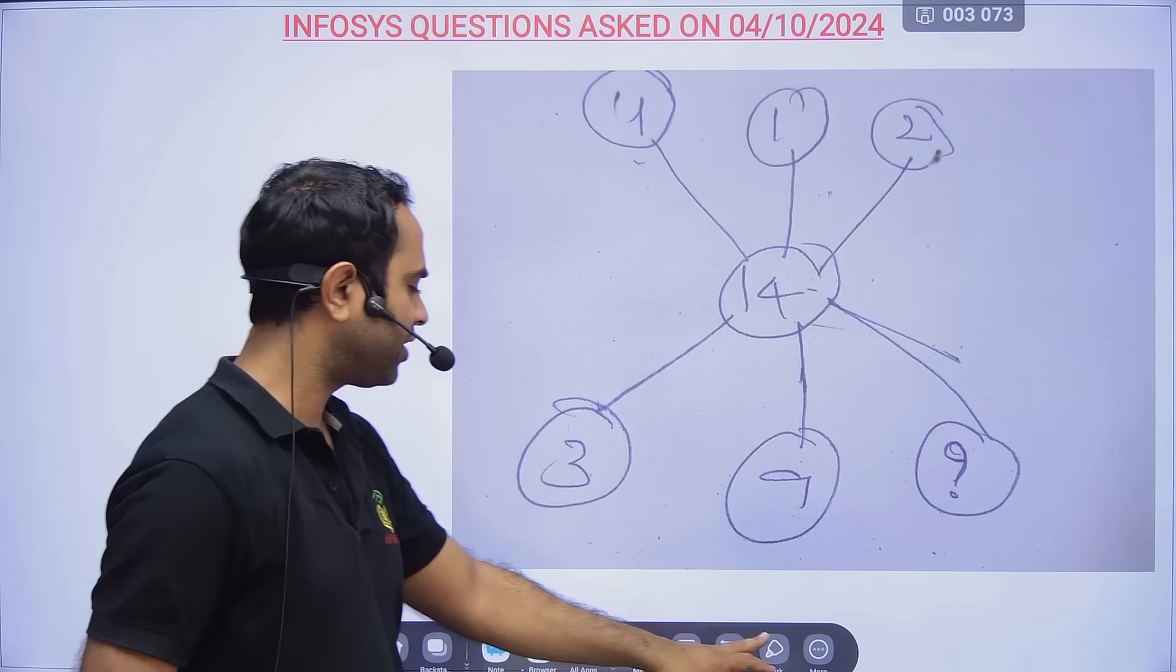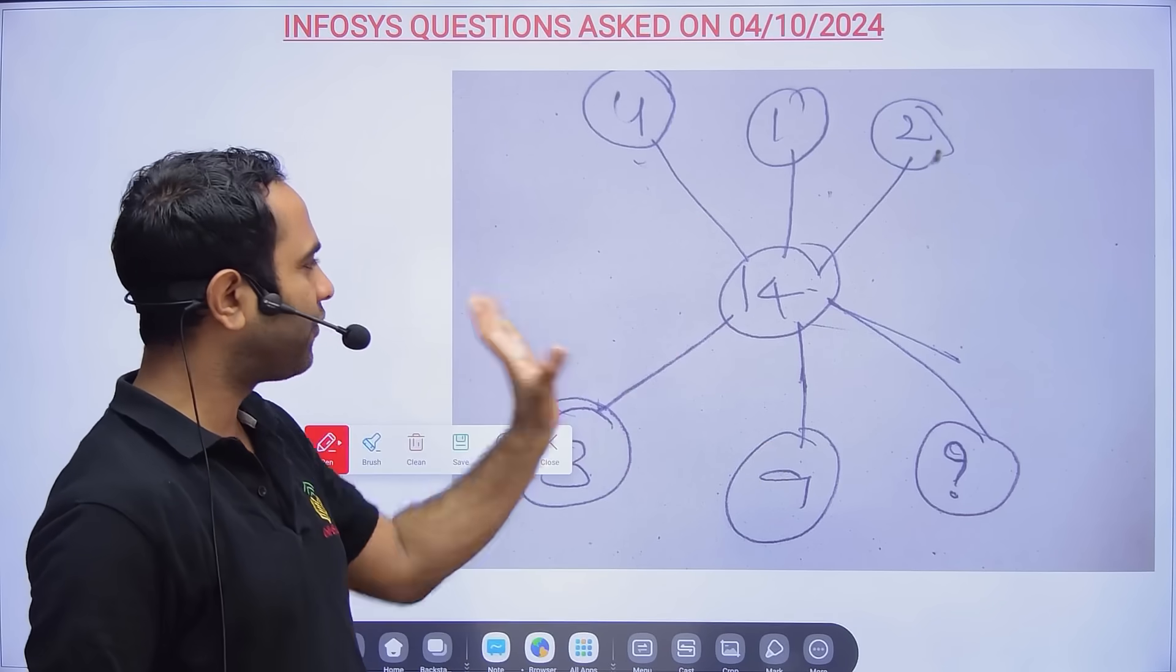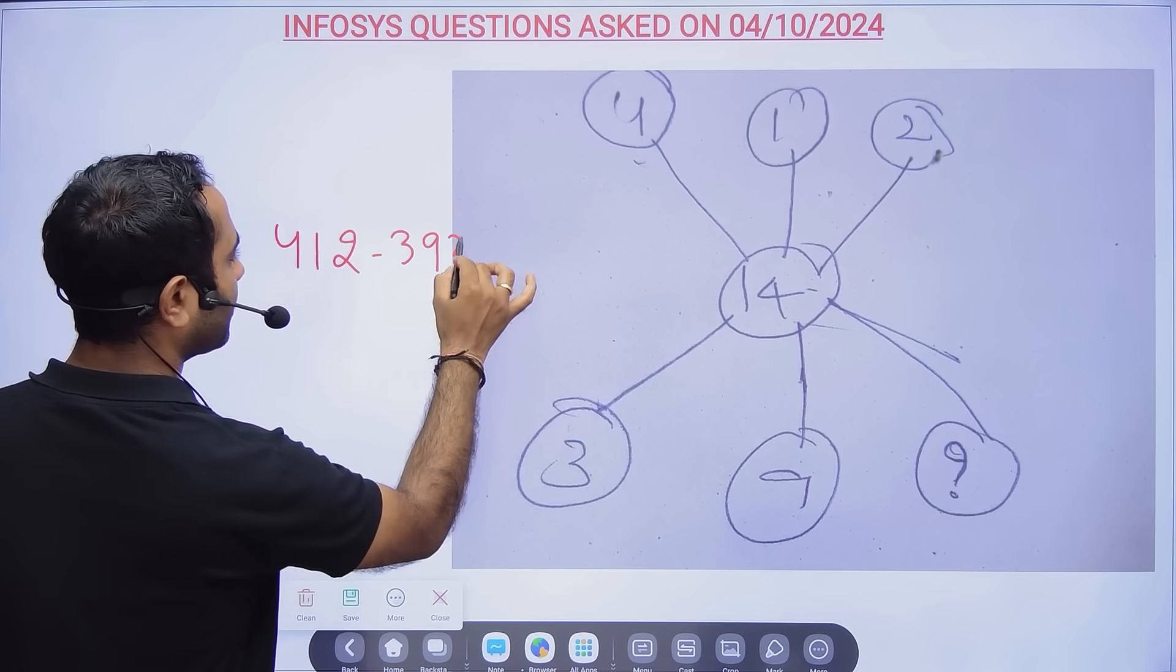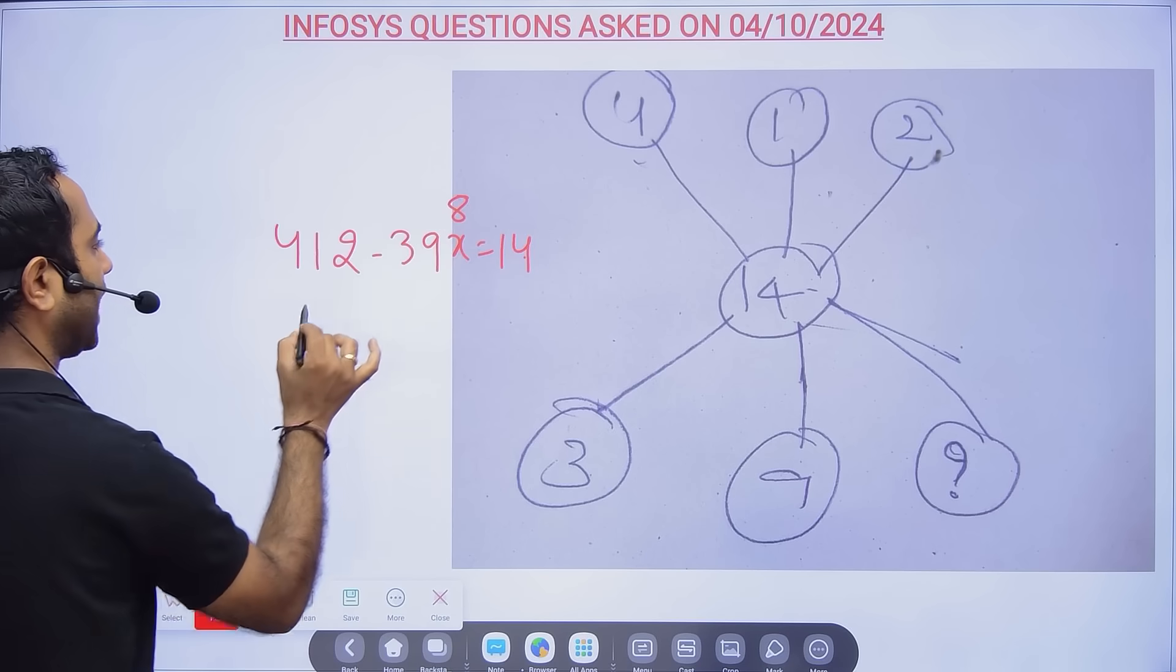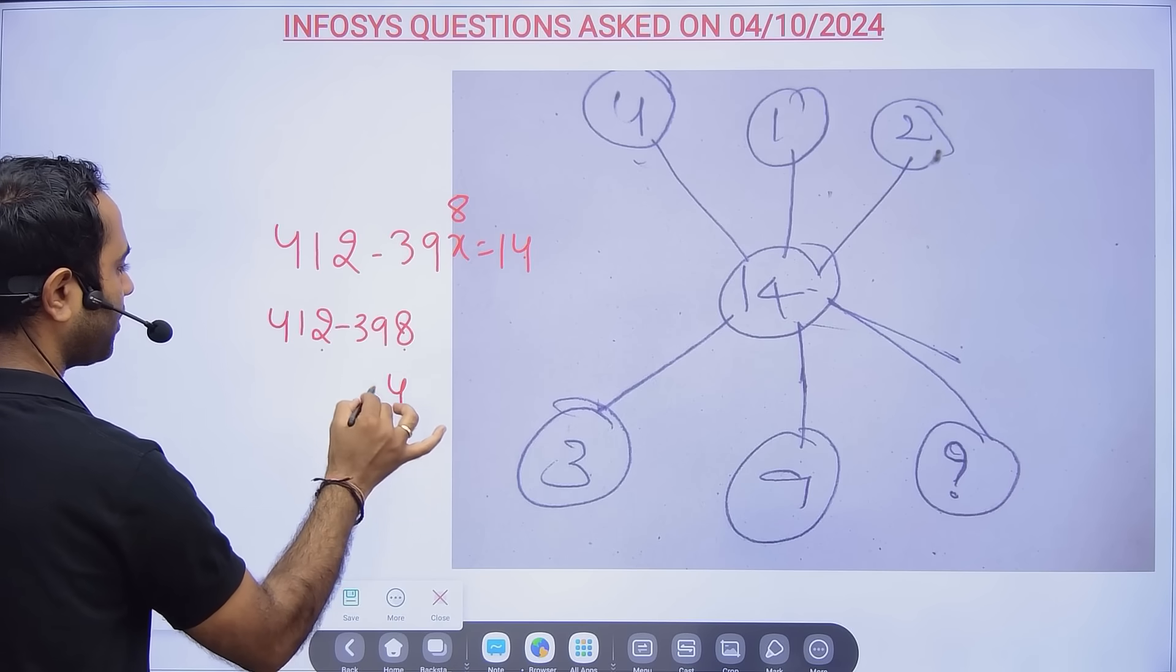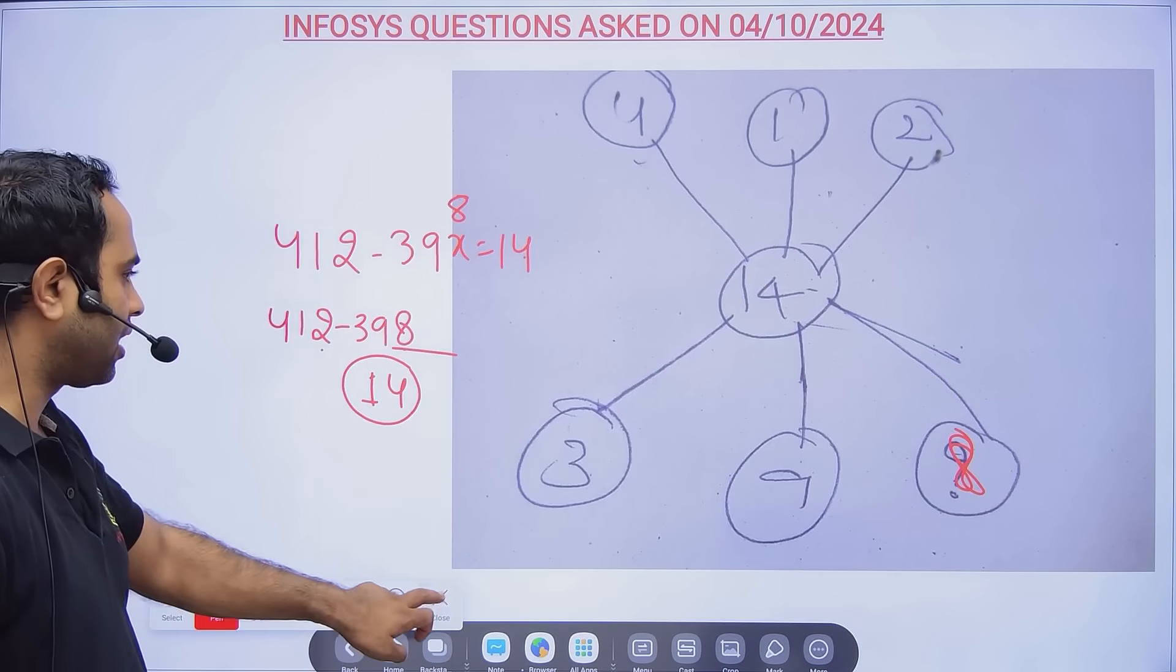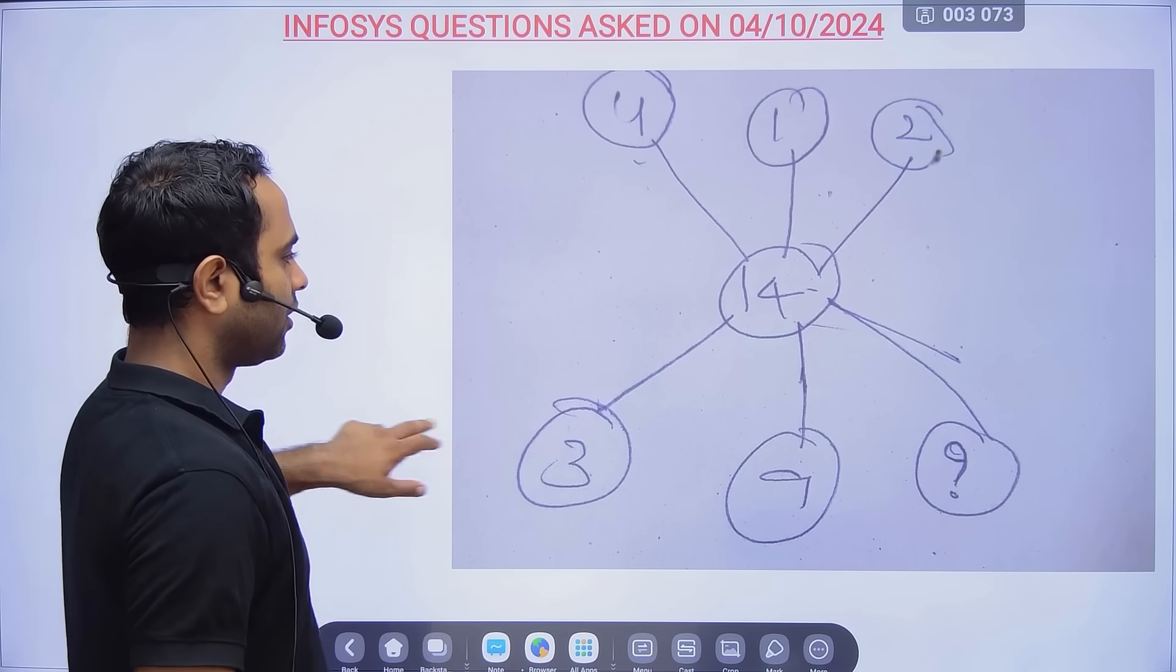This was a shift 2 puzzle. Options are not there, so it will be difficult to understand. Here basically 412 minus 398 = 40. If you want 4 here, you will have to bring 8. 12 - 8 = 4, 10 - 9 = 1. So the option would have been 8.